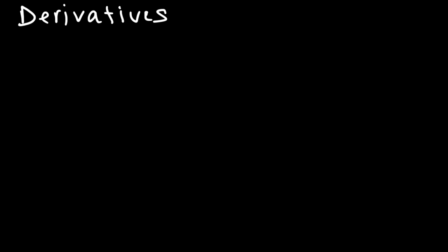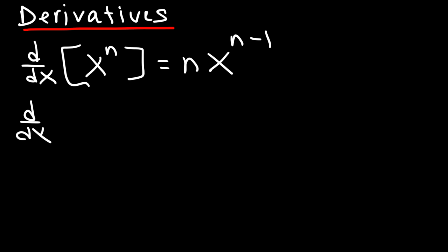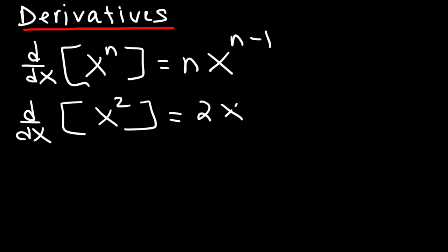Now let's move on to derivatives. The most basic rule you need to know is the power rule. The derivative of x raised to the n power is n times x raised to the n minus 1. For example, the derivative of x squared: n is 2, so it's 2 times x to the 2 minus 1, giving us 2x.